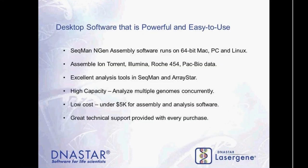The software we'll look at today includes SeekMan Engine assembly software and downstream analysis tools. SeekMan Engine runs on 64-bit Mac, PC, and Linux, and is platform-agnostic — we can assemble Ion Torrent and other platform data. Analysis tools are primarily in SeekMan Pro and ArrayStar. The capacity is high — we can do multiple human genomes concurrently, assemble multiple exomes, or very large projects — and the cost is under $5,000 for both assembly and analysis software.